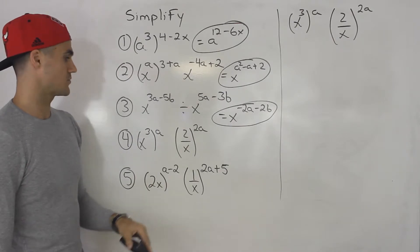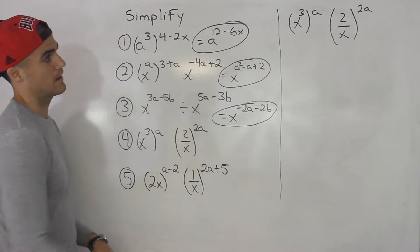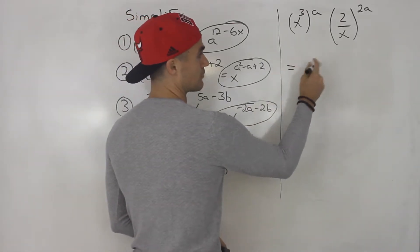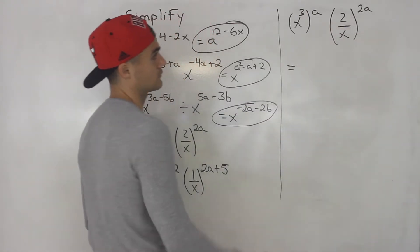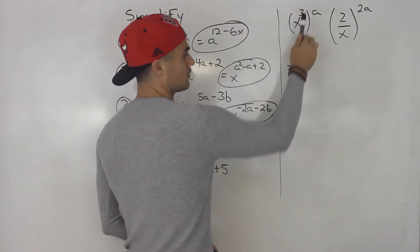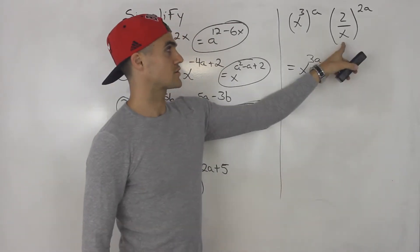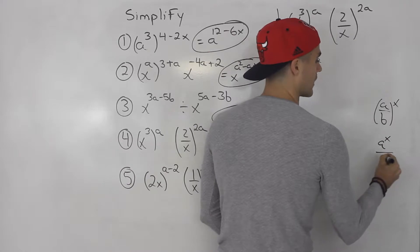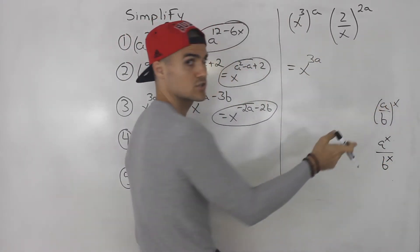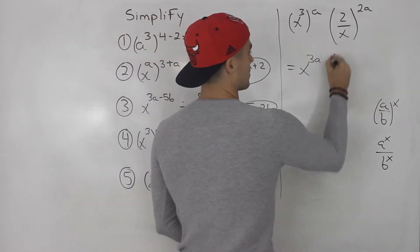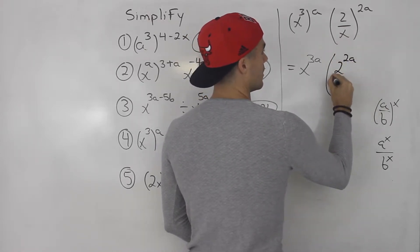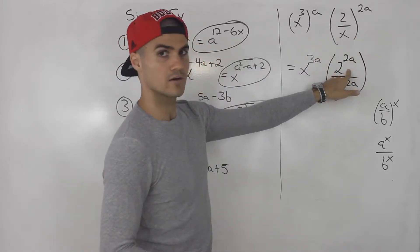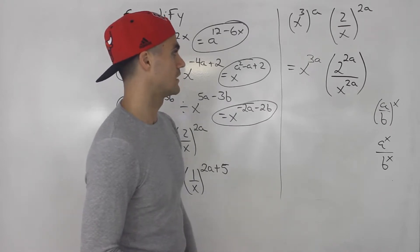Number four: we got x to the power of three to the power of a, and then we have two over x to the power of two a. We're going to have to combine a bunch of exponent laws. First, multiply the exponents — so this would just be x to the power of three a. Now this is a fraction to the power of an exponent: distribute that exponent to both the numerator and denominator. So we can rewrite as two to the power of two a, all over x to the power of two a.